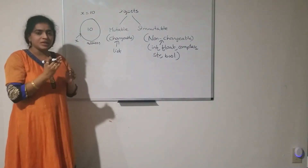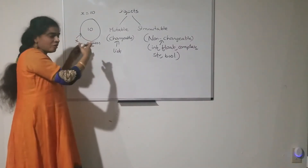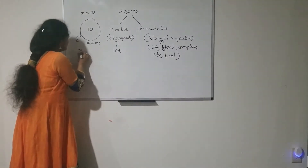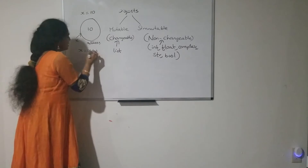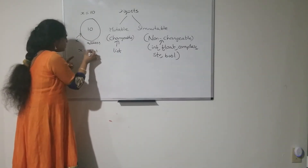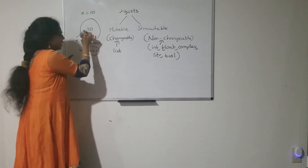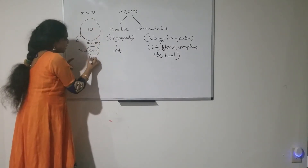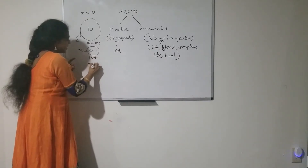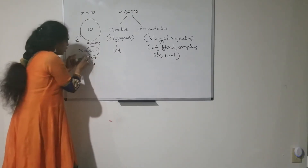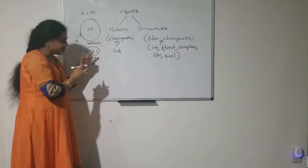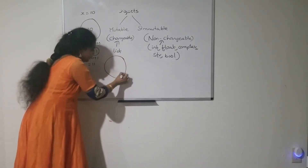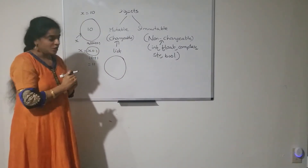Suppose if I am going to perform any change on that object — for example x = x + 1 — I am performing some change on this object. As x is a reference variable referencing to object 10, 10 + 1 = 11. Because of this change, a new object is created.